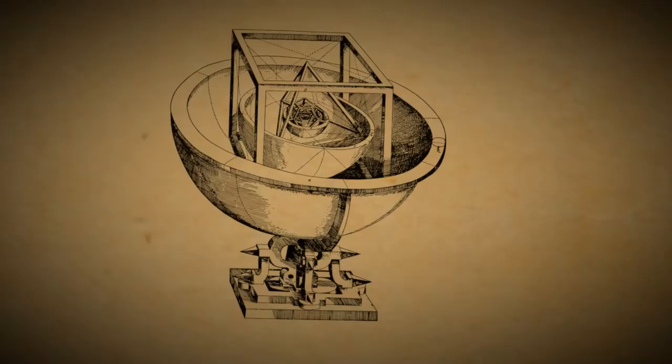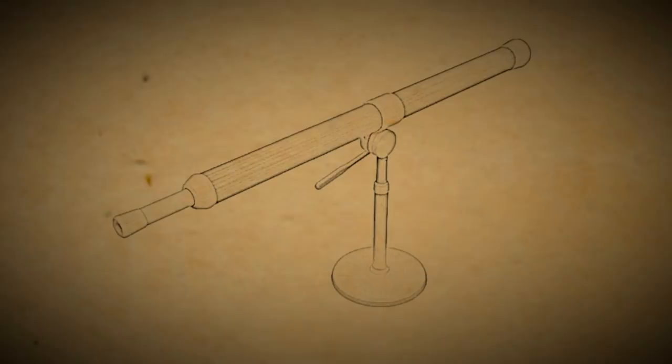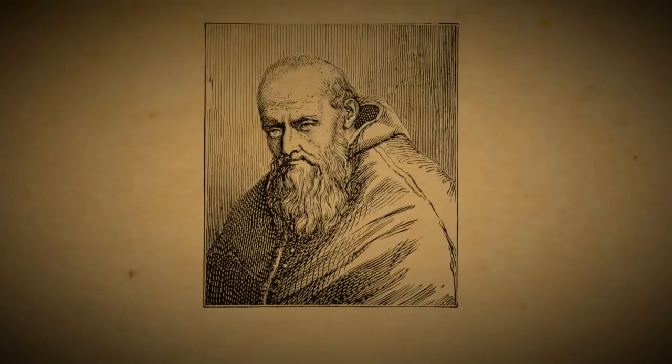Perhaps the most well-known supporter of Copernicanism is Galileo Galilei. In the 17th century, he invented the telescope and used it to support Copernicus's theory. He stated that he saw phases on Venus and moons orbiting Jupiter, which disproved the idea of geocentrism.